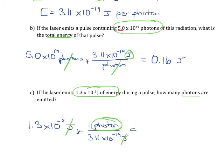So now our units of joules are going to cancel, and we're going to be left with units of photons. Make sure you can put that into your calculator correctly, round it to two significant figures, and you should get 4.2 times 10 to the 16 photons.